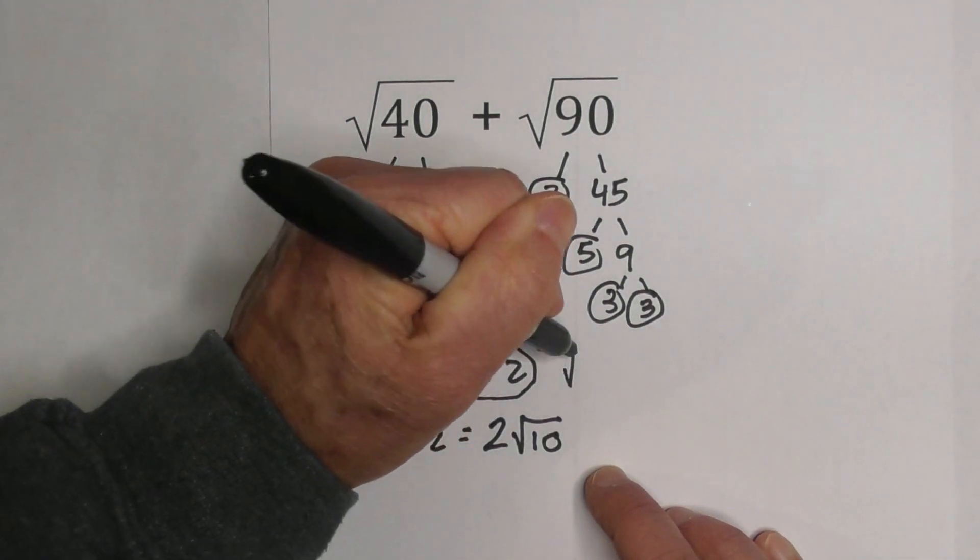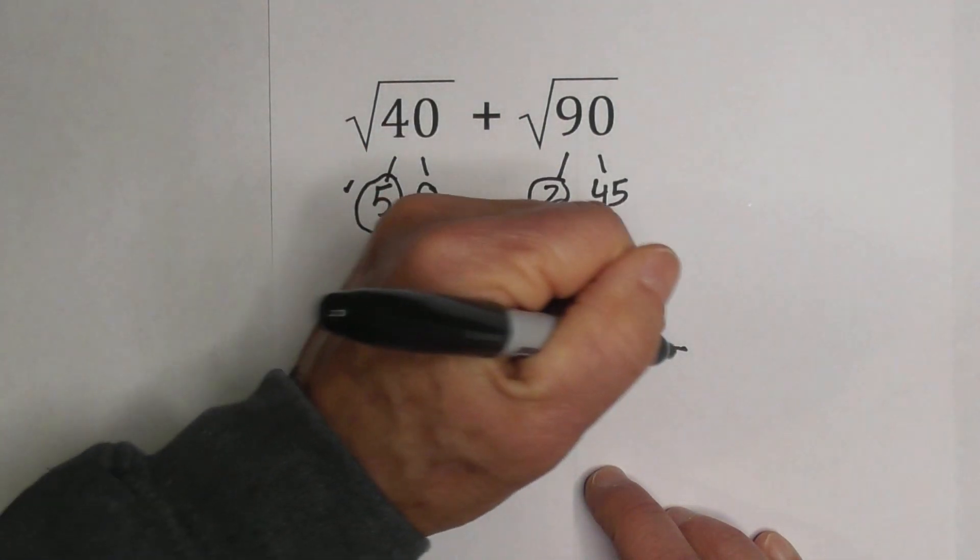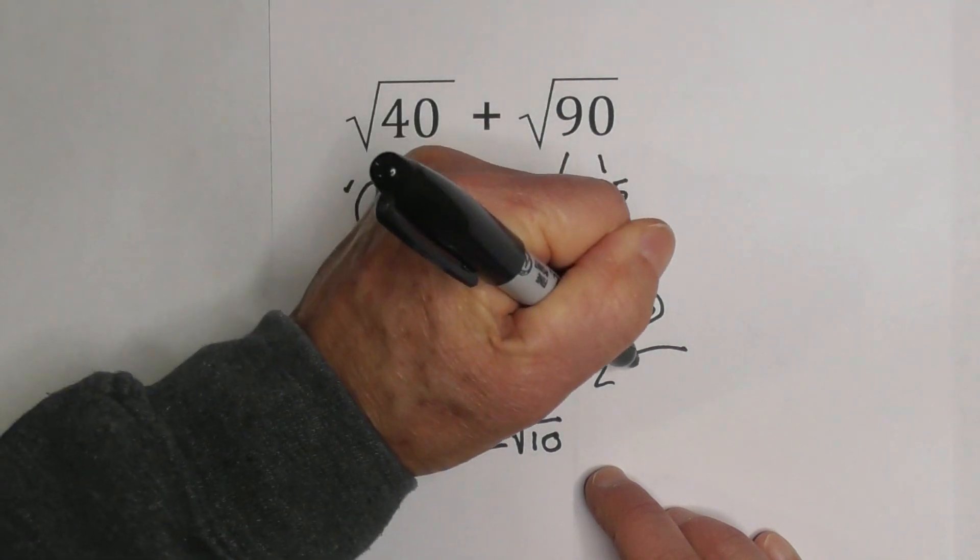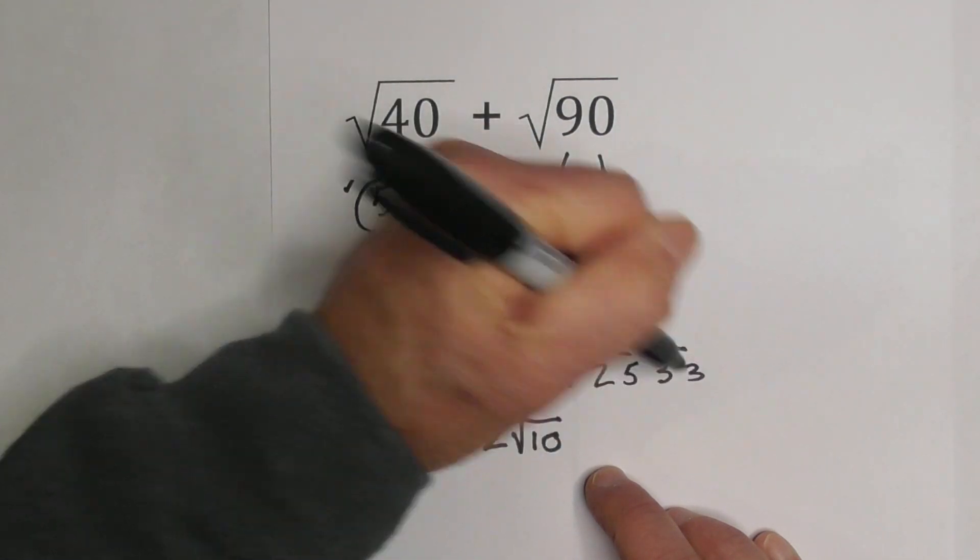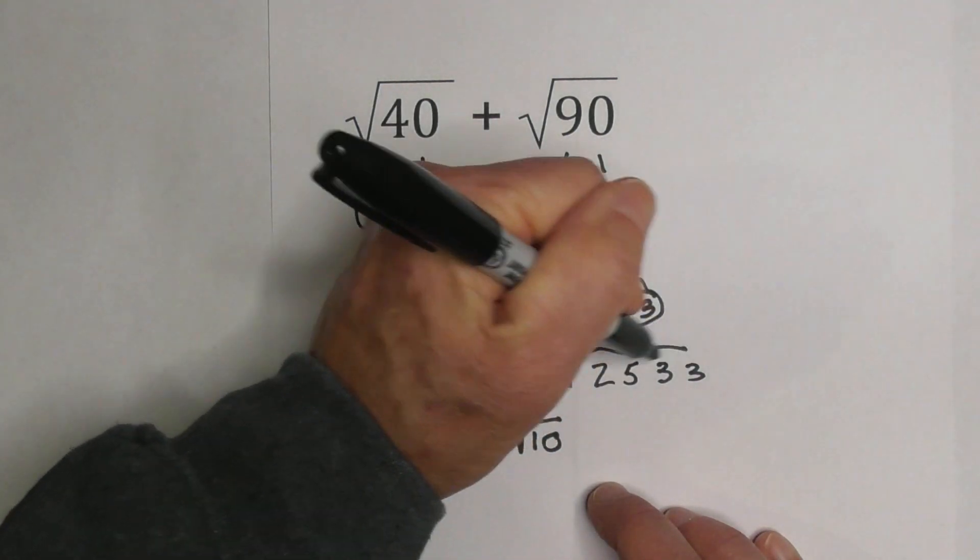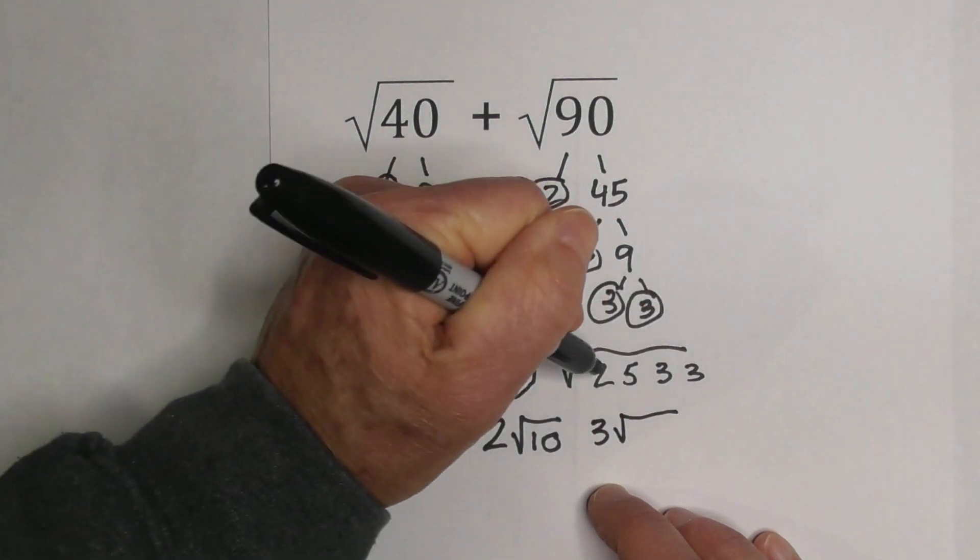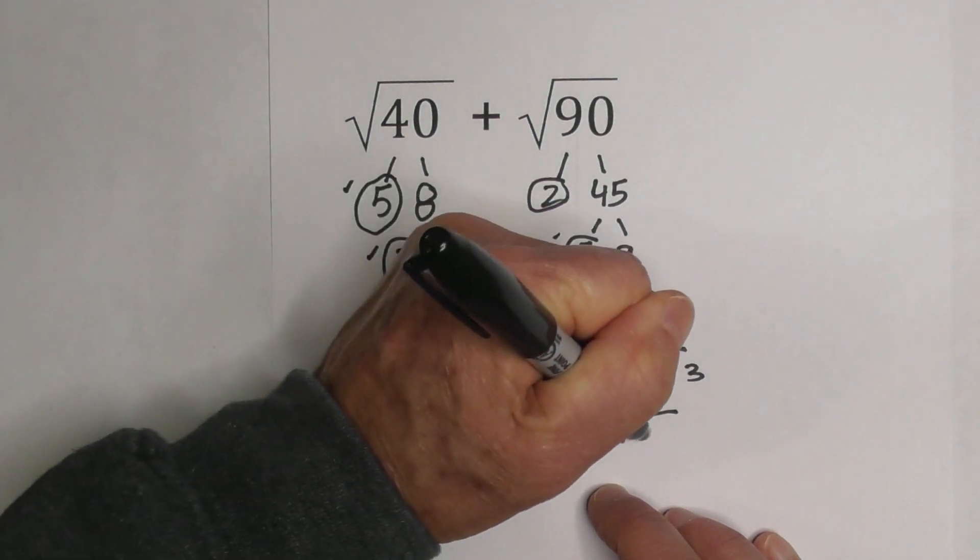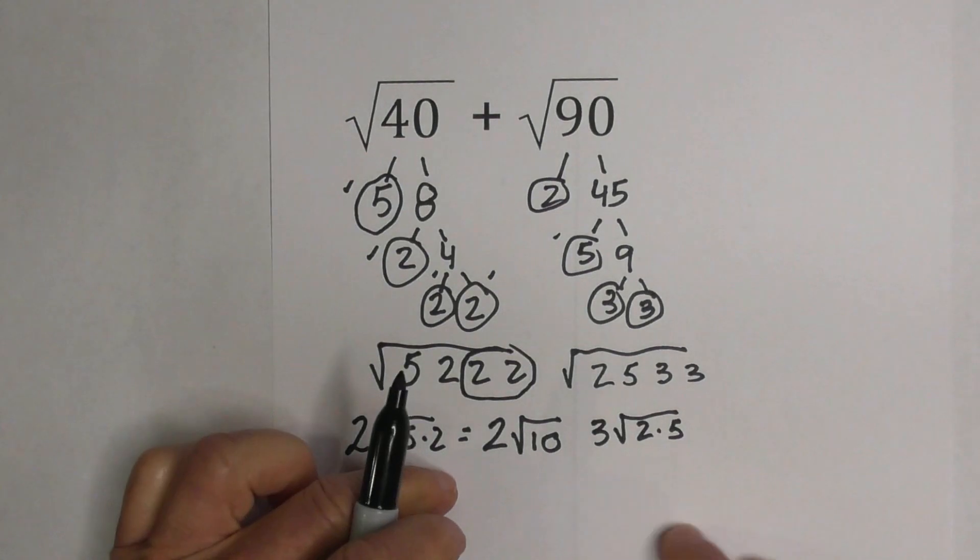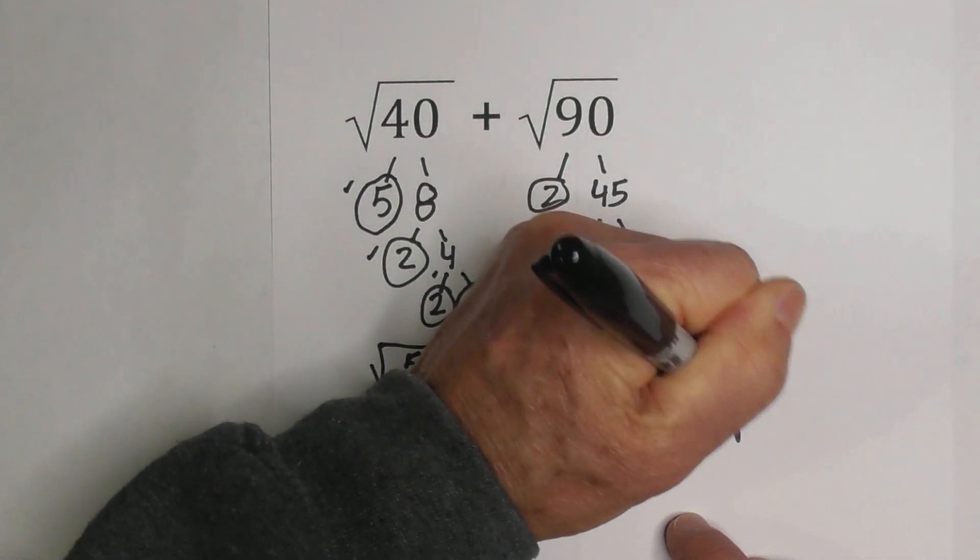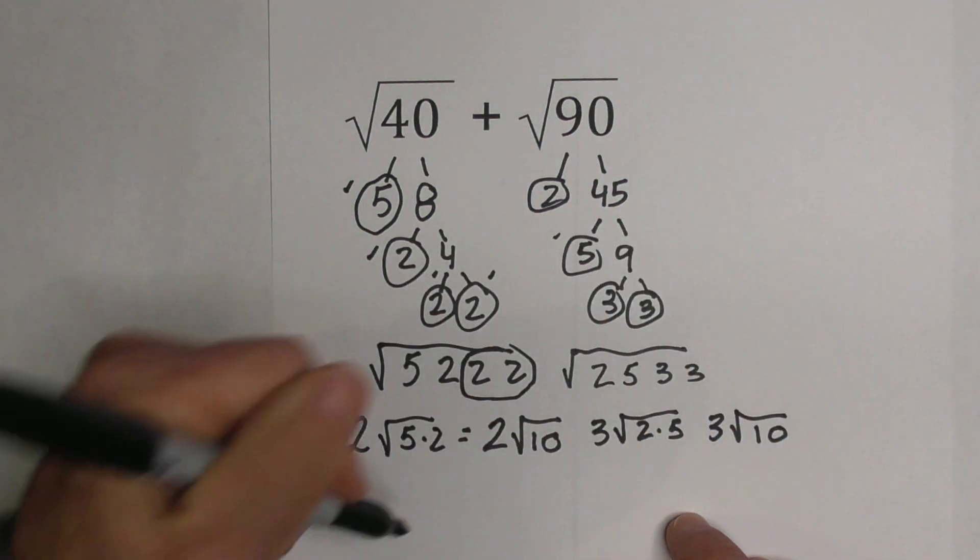I'm going to do the same thing, place everything underneath the square root sign. I have a 2, a 5, a 3, and a 3. I can pull out a pair of 3s, so I have 3√10. Again, I have 2 and 5, and so that equals 3√10.